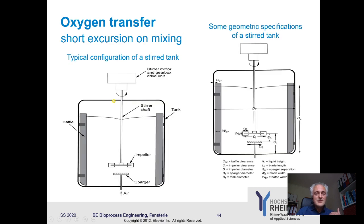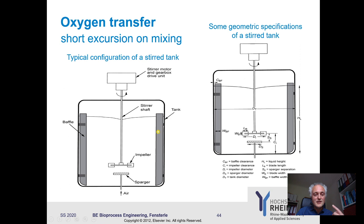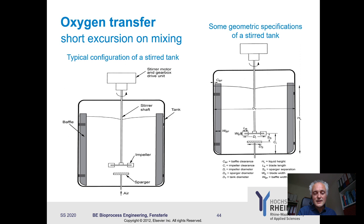A stirred tank reactor typically has an impeller — commonly a Rushton turbine — with a sparger underneath it, so bubbles flush through the impeller. Baffles are placed at the side to prevent regular rotational movement and instead generate an irregular, chaotic mixing pattern, which is best for dispersion. Reactor geometry directly influences KLA: larger impeller diameters and baffle surfaces bring more force into stirring, which affects efficiency.